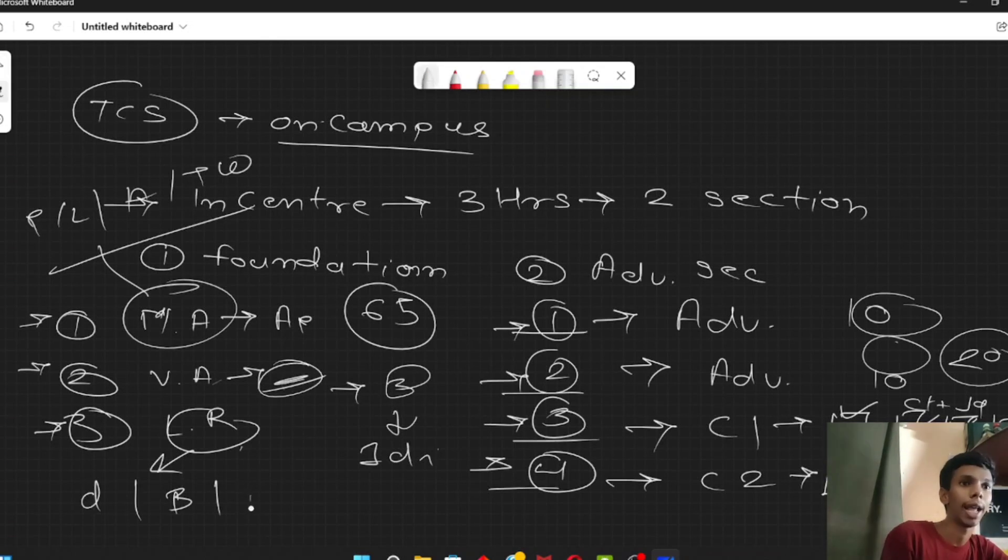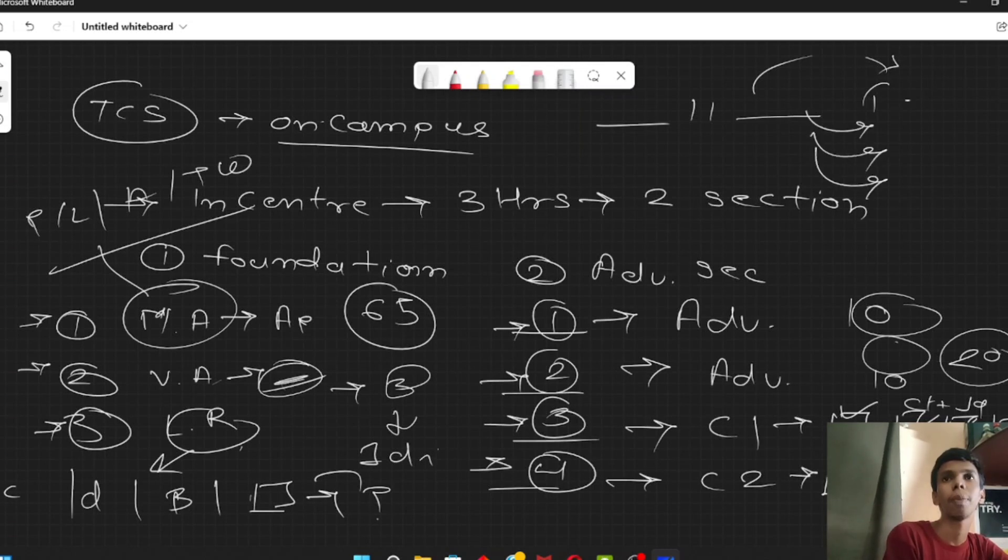Apart from that, direction, blood relation, then the diagram flow - what will the next diagram be? Besides, code decode. I mean, you will have a code, and the second part will also be given, and you will have to find out how the code is similar.